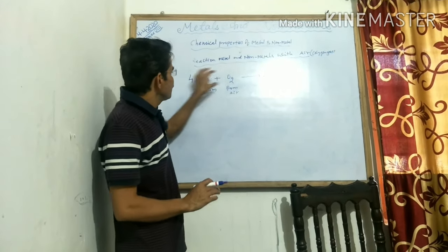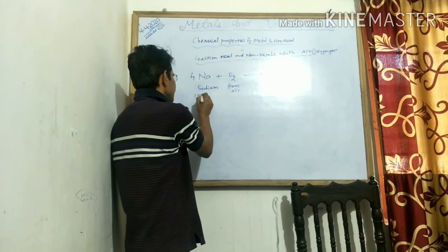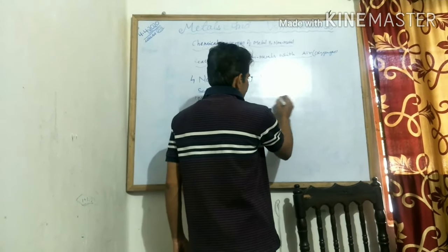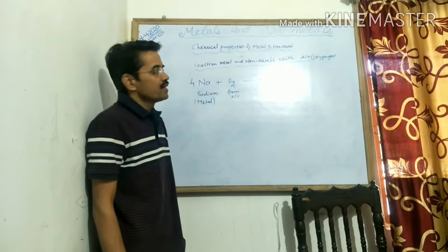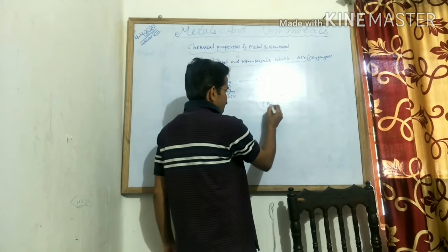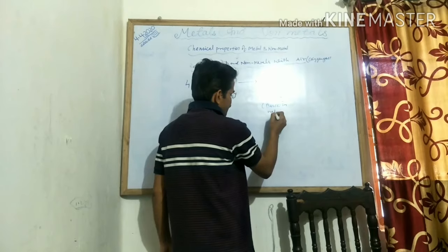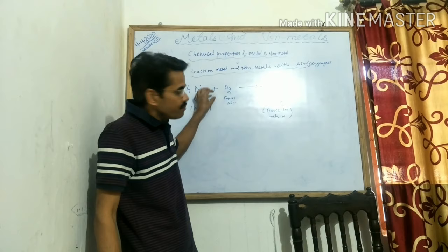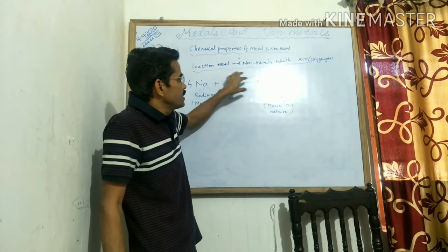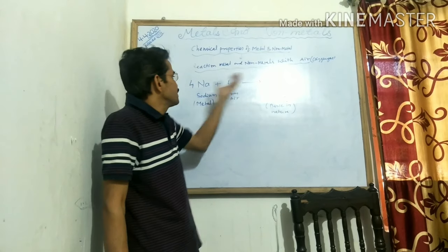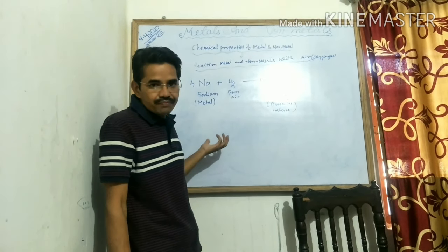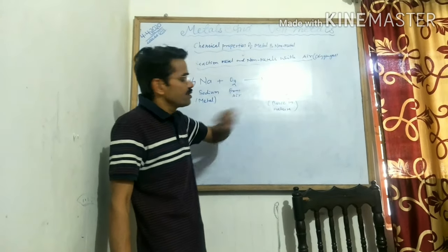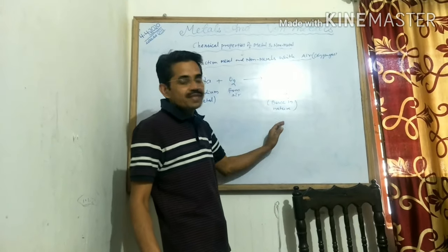Now see what happens when metals react with oxygen — they form sodium oxide. This is the general concept: whenever a metal combines with oxygen or air, it forms its corresponding oxide, whether it is sodium, magnesium, calcium, or any other metal. They all combine with oxygen and form their oxide.